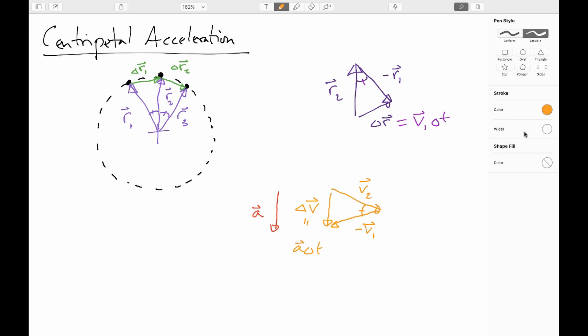So now we can play a game with similar triangles. We can say that the V2, V1 are not the same because their directions are different, but their magnitudes are the same. So we can say that the magnitude is just plain V. So we can say that delta V is to V as delta R is to R.